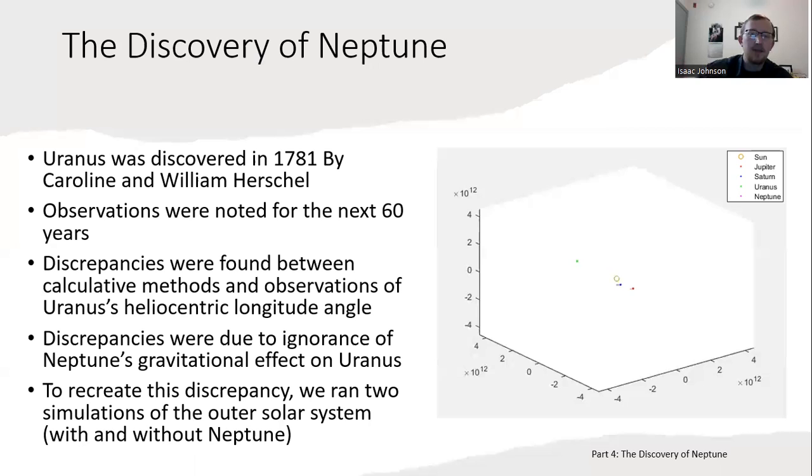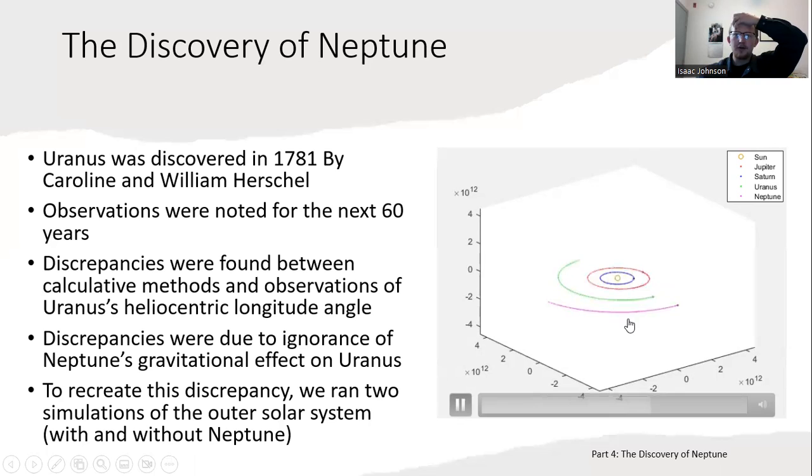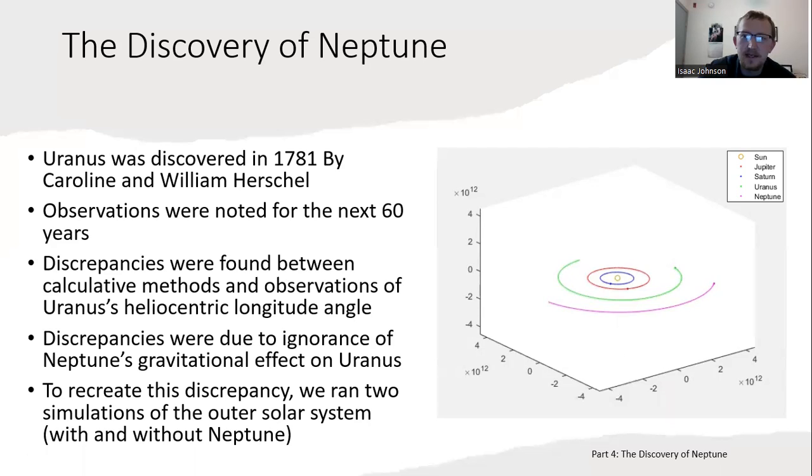For us to recreate the discrepancy, we ran two simulations of the outer solar system. The first one is without Neptune—you've got Jupiter in blue, Saturn in red, and Uranus is in light green. Nice, orderly, beautiful, periodic orbits thanks to the sun for being so massive. Then we ran simulation of our outer solar system with Neptune involved in magenta. You can see right now Neptune's kind of pulling Uranus to go faster in its orbit, but now Uranus is getting pulled backwards by Neptune, so the orbit would be slowing down. This is what caused the discrepancy in the data.